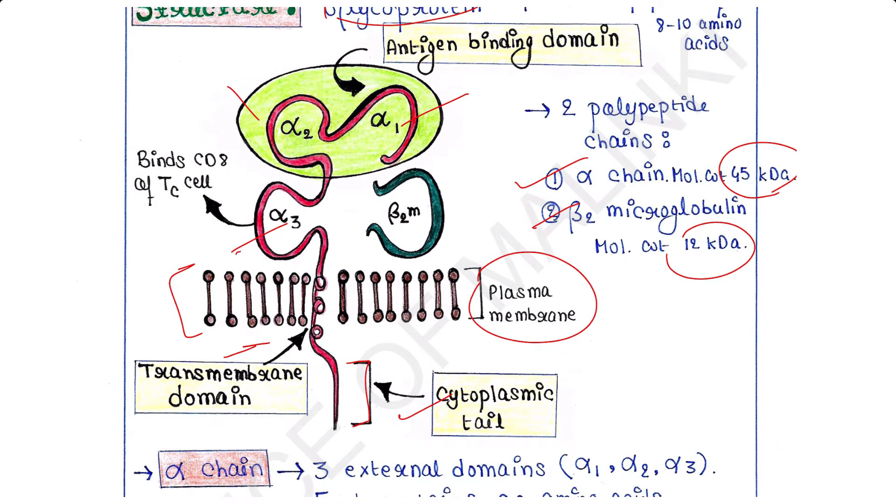The alpha 3 domain binds CD8 co-receptor of cytotoxic T cells or Tc cells. Alpha 1 and alpha 2 domains bind antigen. They bind a peptide of 8 to 10 amino acids.